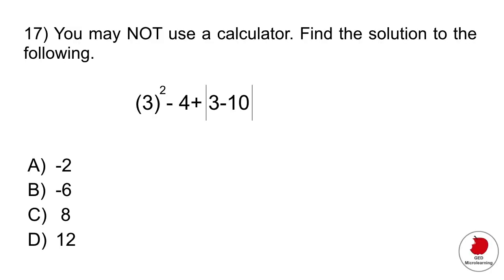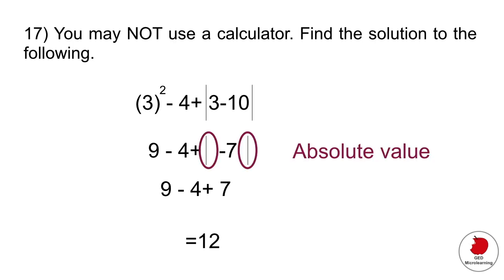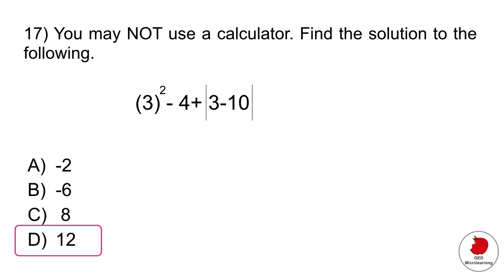Question 17 is another no-calculator problem asking you to solve an expression following order of operations: parentheses first, then exponents, then multiplication and division. Work out the exponents on the left — 3 squared is 9 minus 4. Then evaluate what's inside the vertical lines: 3 minus 10 gives minus 7. Those vertical lines represent absolute value, which turns the number positive, so minus 7 becomes positive 7. Adding the three numbers gives 12, which is option D.